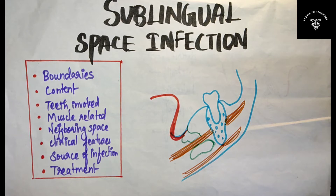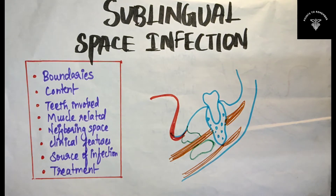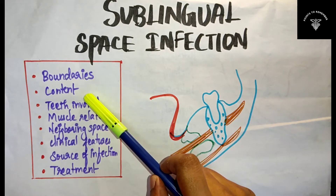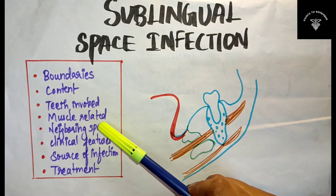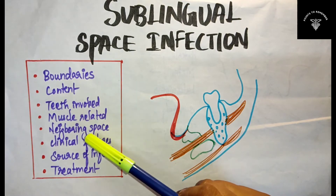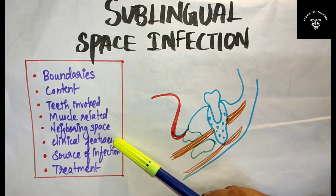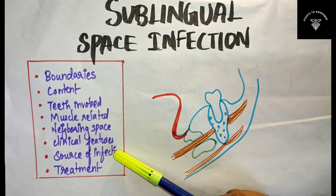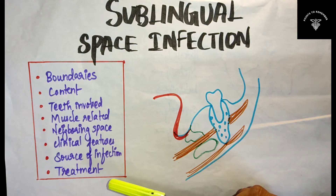Hello everyone, welcome to my channel. Today's topic is sublingual space infection. Let's discuss the gist of the topic. First, the boundaries of sublingual space, then the content of sublingual space, the teeth involved, the muscle related to the sublingual space, the neighboring spaces, the clinical features, the source of infection, and the treatment of sublingual space infection. These are the headings we are going to deal with.